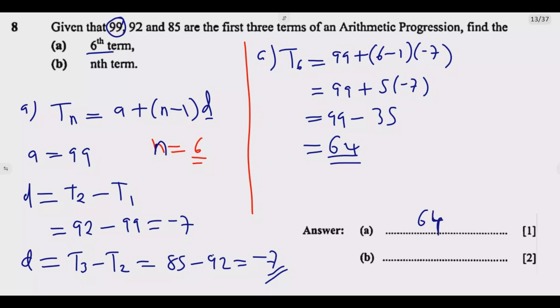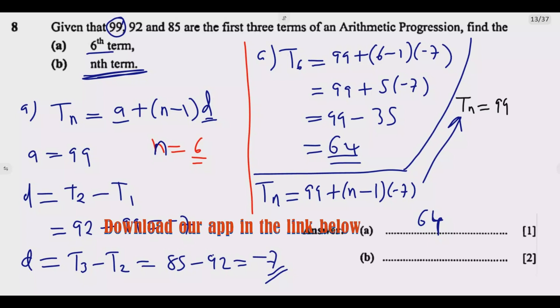For part (b), find the nth term. We know d, so Tn equals 99 plus (n minus 1) times negative 7. Tn equals 99, then negative 7 times n is negative 7n, then negative 7 times negative 1 is plus 7.